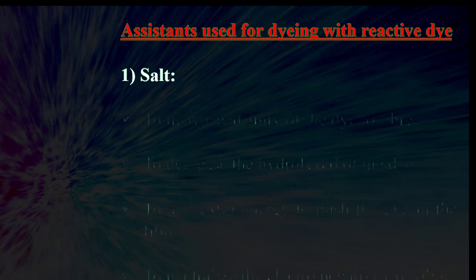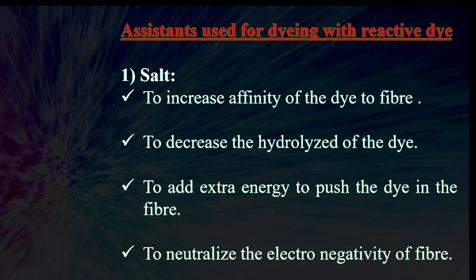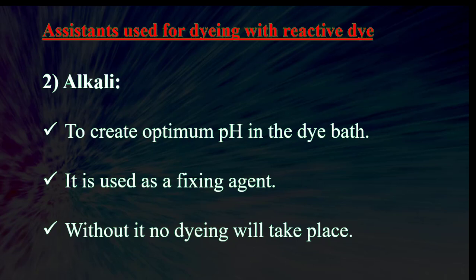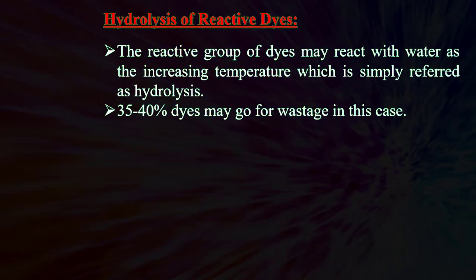Assistants used for dyeing with reactive dye: Salt — to increase affinity of the dye to fiber, to decrease hydrolysis of the dye, to add extra energy to push the dye into the fiber, and to neutralize the electronegativity of the fiber. Alkali — to create optimum pH in the dye bath; it is used as a fixing agent and without it no dyeing will take place.